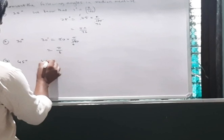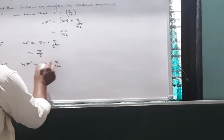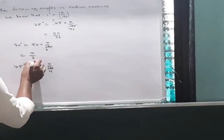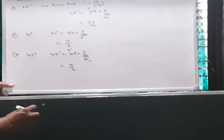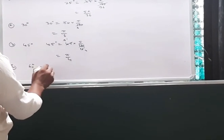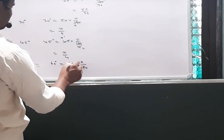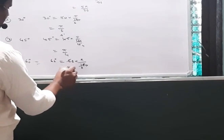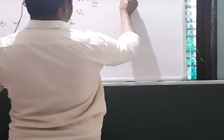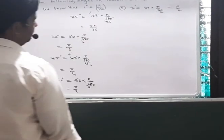Similarly, 45 degrees equals 45 × π/180, which equals π/4 radians. Then 60 degrees equals 60 × π/180; the zero cancels and simplifying gives π/3 radians. The fifth example: 90 degrees equals 90 × π/180, which simplifies to π/2 radians.